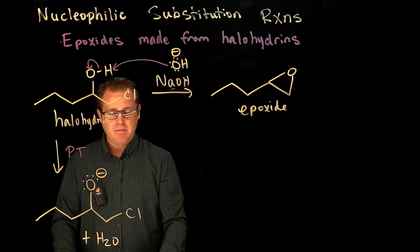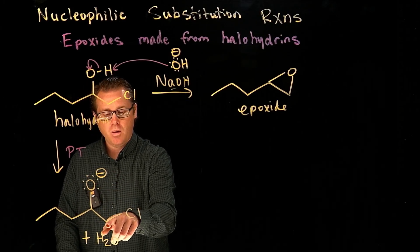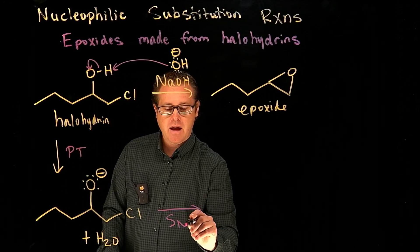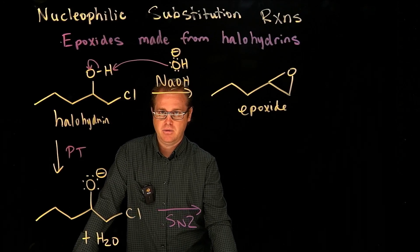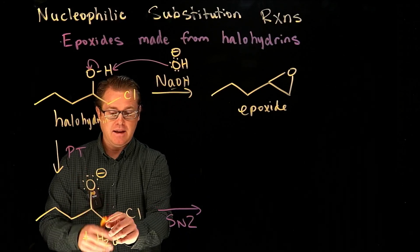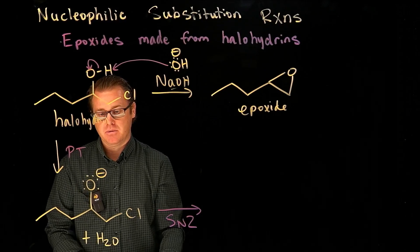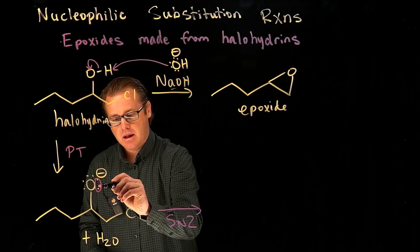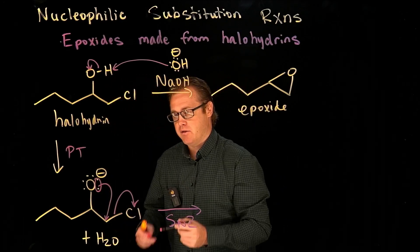Now do you see what's going to happen here? This is electron rich. That carbon is electron poor. And we have a good leaving group. So we are going to do an SN2 mechanism. Now this mechanism is an intramolecular SN2. And an intramolecular mechanism is one where you have the electrophile and the nucleophile all on the same molecule. And so that lone pair right there can come down and attack that electrophilic carbon and kick off the leaving group in that manner.